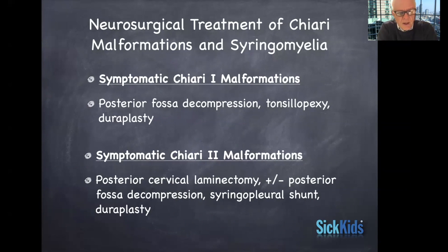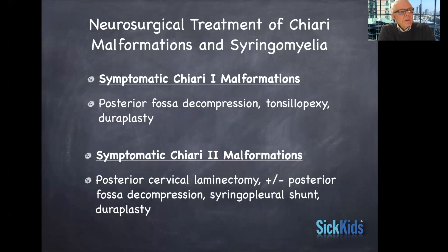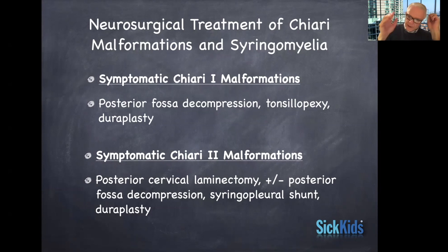For symptomatic Chiari II malformations associated with myelomeningocele, the treatment is not so much posterior fossa decompression as it is a cervical laminectomy. Most of the compression for Chiari II happens in the cervical spine as opposed to in the occipital bone area.